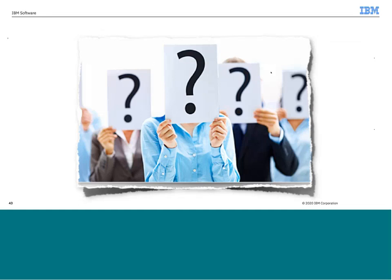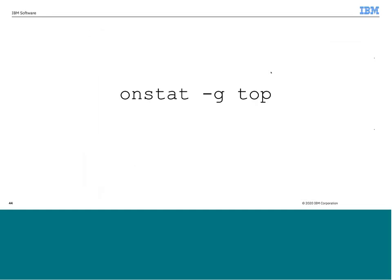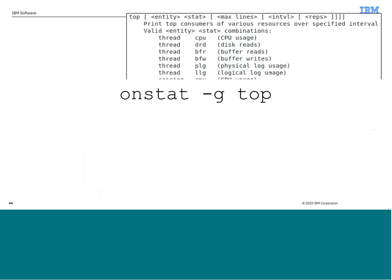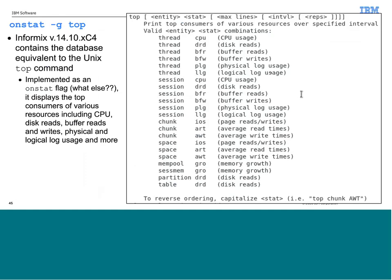One more cool little feature: you guys are all familiar with the top command inside of the operating system. The instance now has a top command within it via a new ONSTAT flag. ONSTAT -g top gives you a whole series of information on session and instance resources and how they're being used. You can look at different threads, different CPU and disk reads, buffer reads, physical log reads, disk reads, memory growth — all sorts of information.